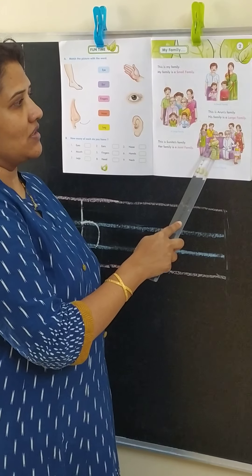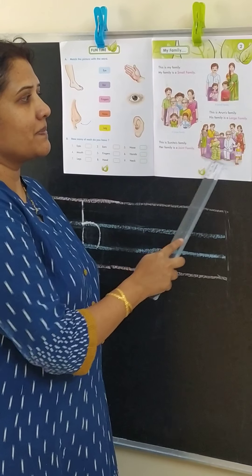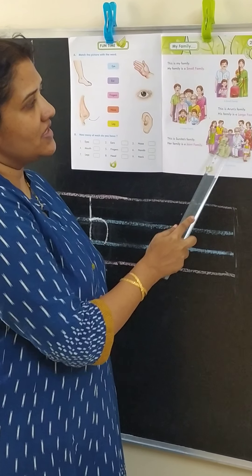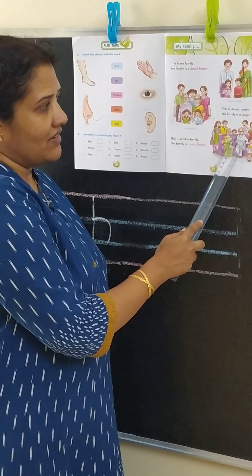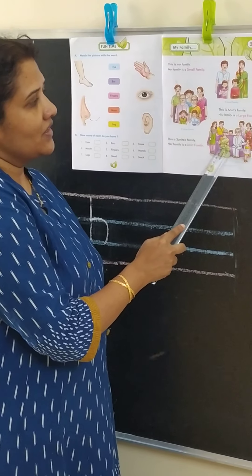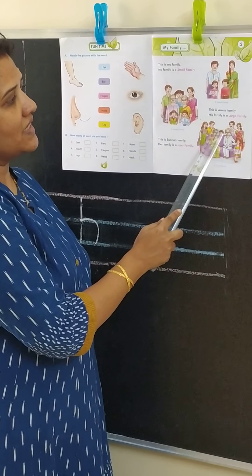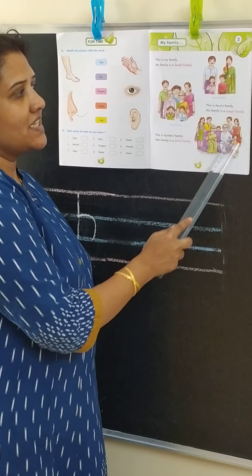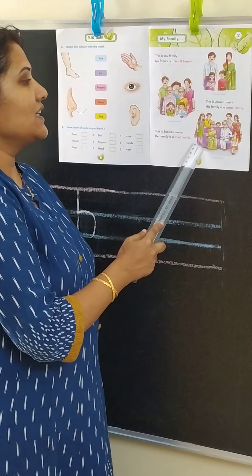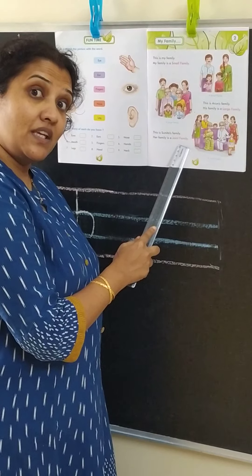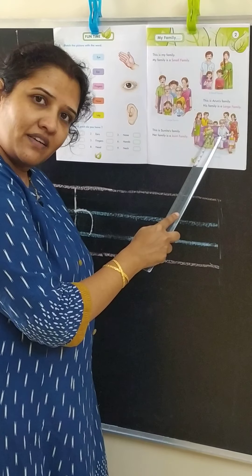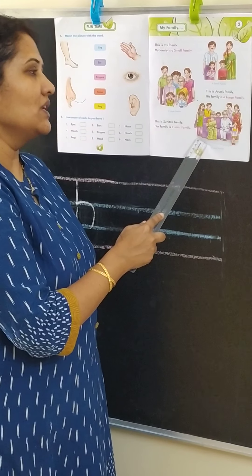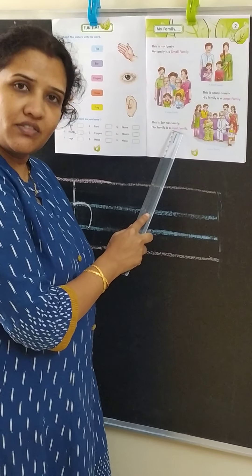Now look at this picture. There are so many people in this picture. We have mother, we have father, we have children, and then we have grandfather and grandmother. Now who are these two? They are uncle and auntie. So if all of them are staying together, then it's a joint family. If you have grandparents and your uncle and auntie also staying with you, then it's a joint family.